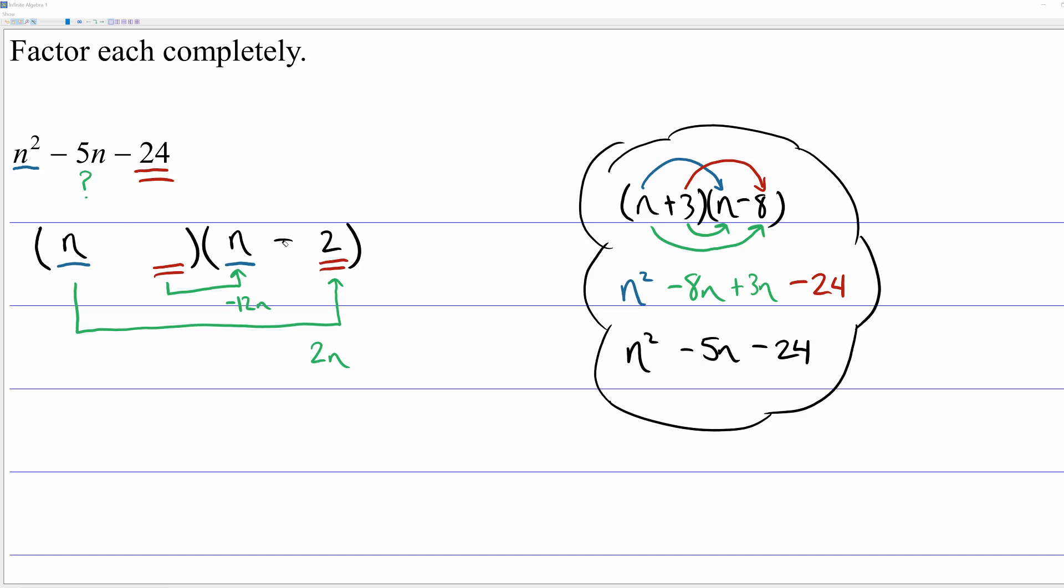I need two numbers that multiply together to give me negative 24. But at the same time, I can juggle these outside and inside terms to get negative 5n in the middle. And as it turns out, and you will come to this through trial and error, if you put a plus 3 and a minus 8, that will do the trick.